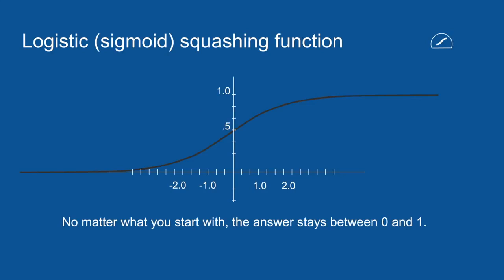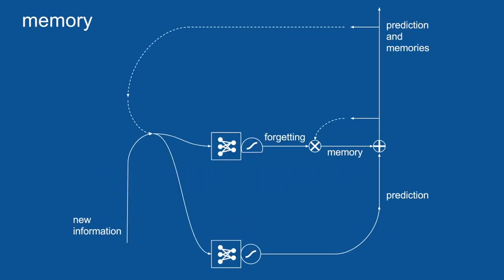Now in order to do gating, it's nice to have a value that you know is always between 0 and 1. So we introduce another squashing function. This will represent with a circle with a flat bottom and it's called the logistic function. It's very similar to the other squashing function, the hyperbolic tangent, except that it just goes between 0 and 1 instead of minus 1 and 1.